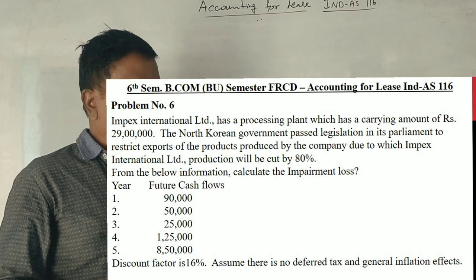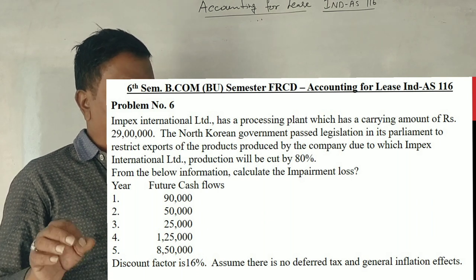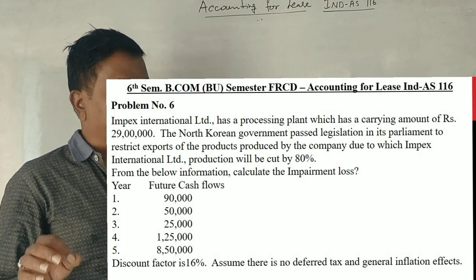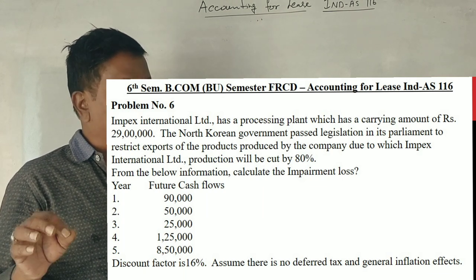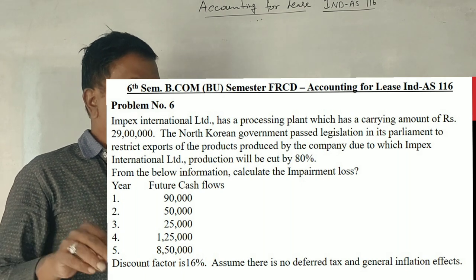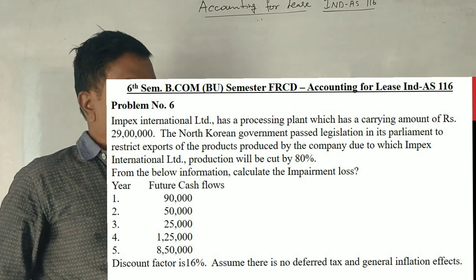The North Korean government passed legislation in its parliament to restrict exports of the products produced by the company, due to which Impex International's production will be cut by 80%. From the above information, calculate the impairment loss.